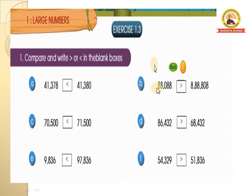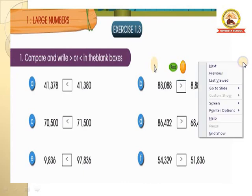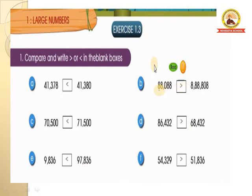Next B: 88,088 and 8,88,088. This first number is a 5-digit number and the second is a 6-digit number. The 6-digit number is greater, so the fish opens its mouth towards the greater number: 88,088 is less than 8,88,088.